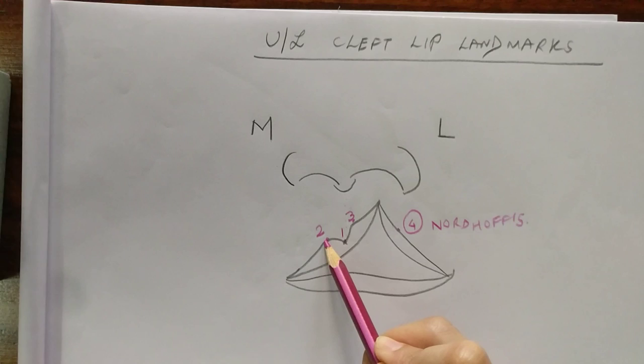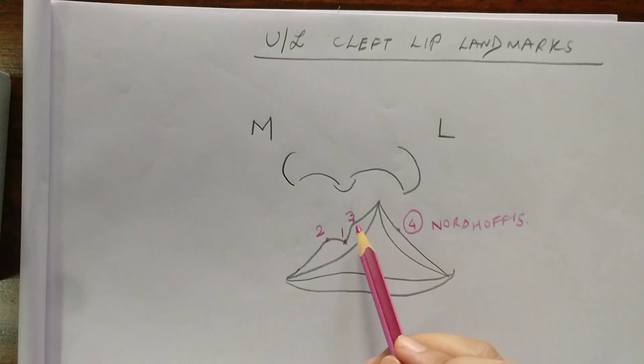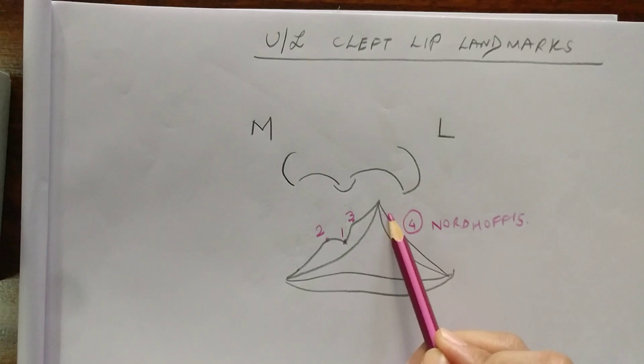In certain instances the distance between the angle of the mouth and peak of cupid's bow on the non-cleft side can be calculated and similarly this distance can be taken to mark point 4 on the cleft side. But because the lip is a sphincter, the lip is constricted on the cleft side, so this may not give us the proper guideline.